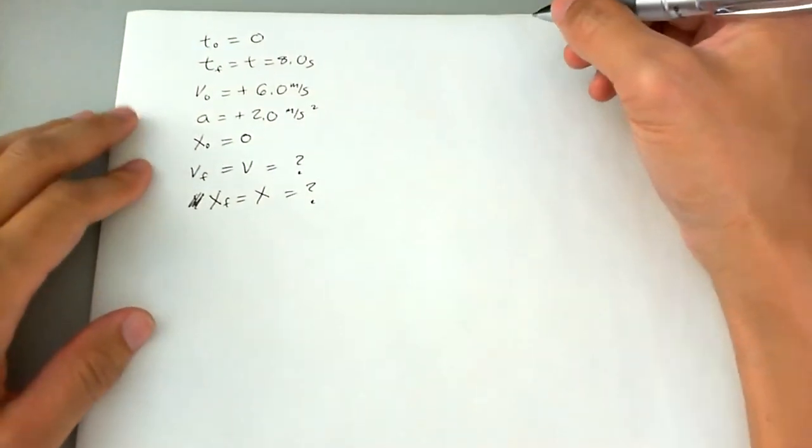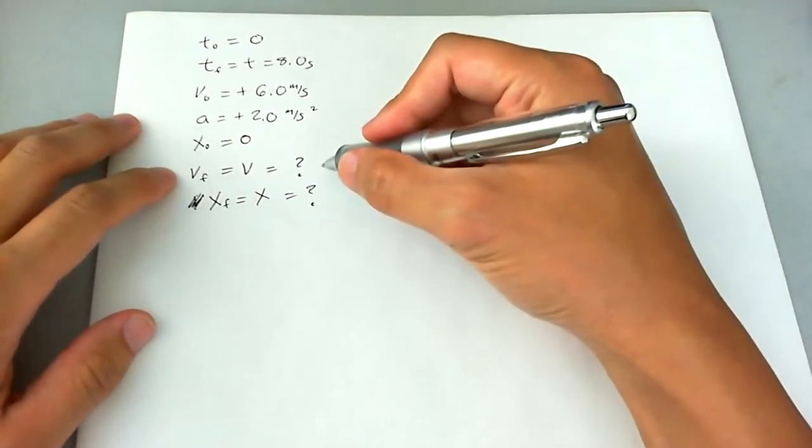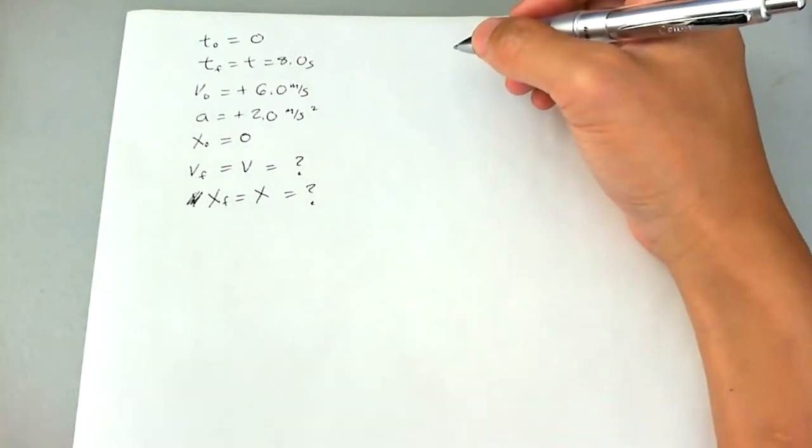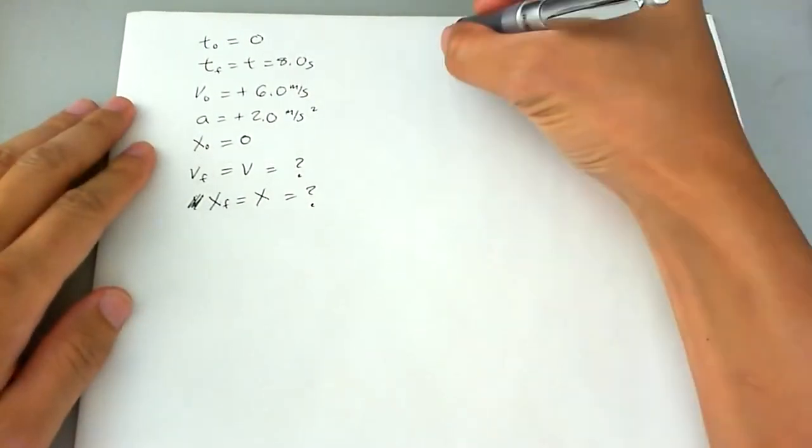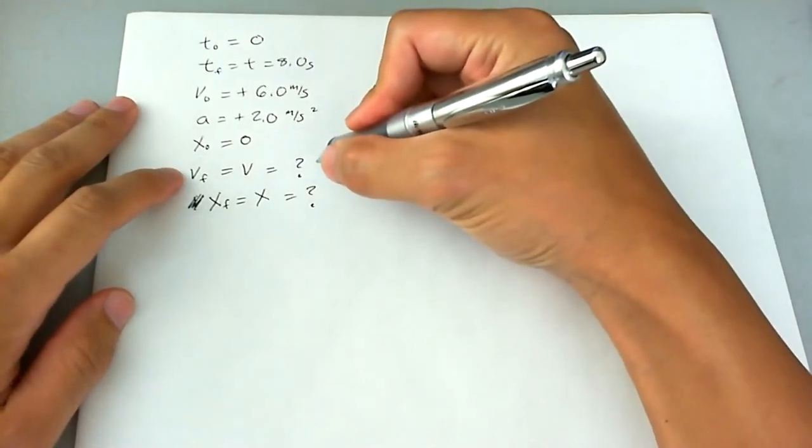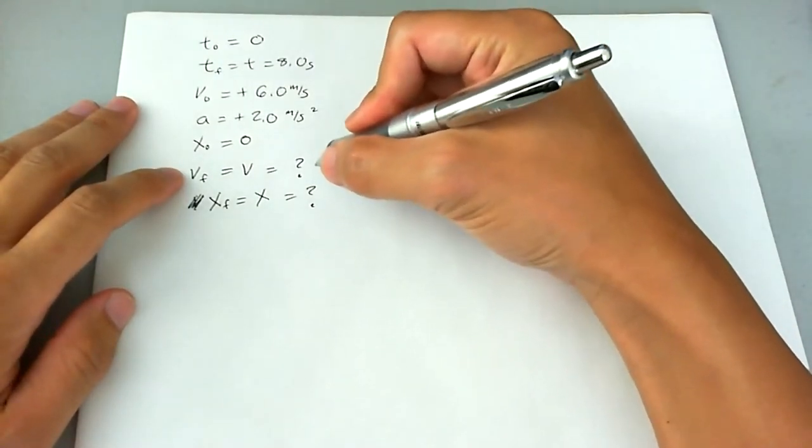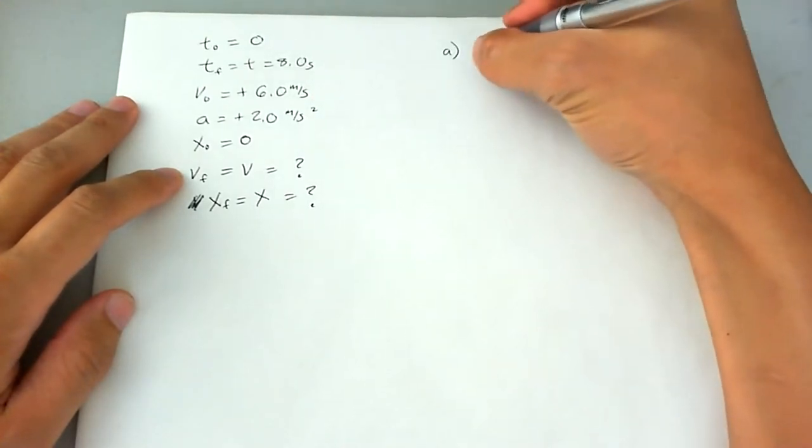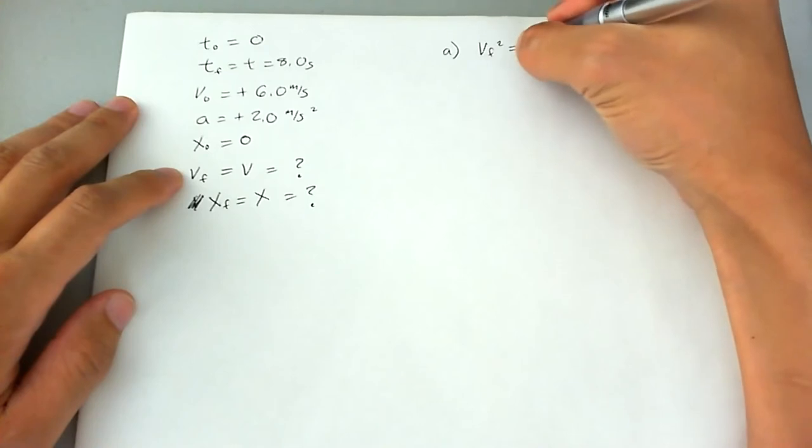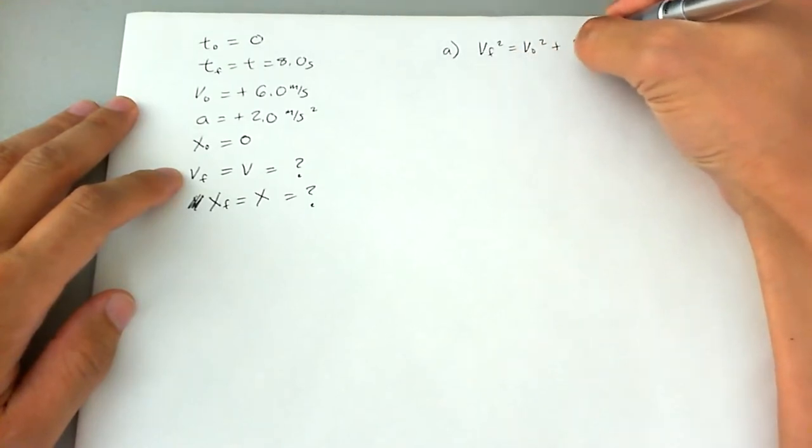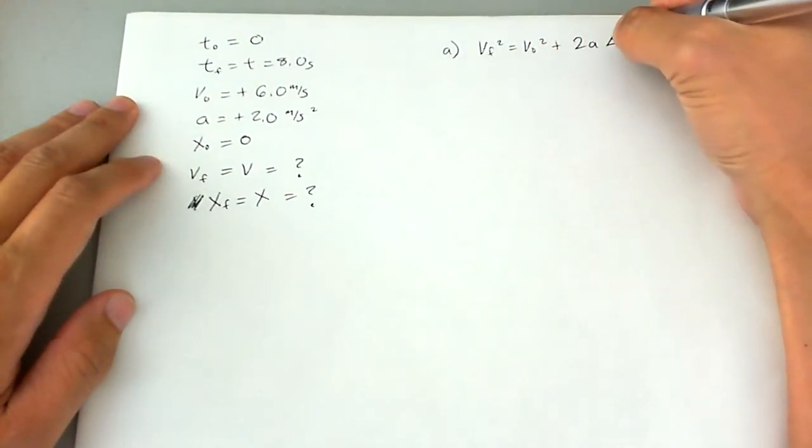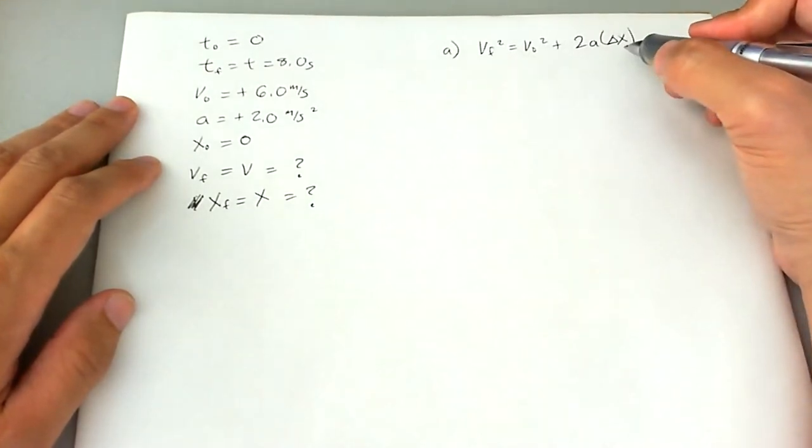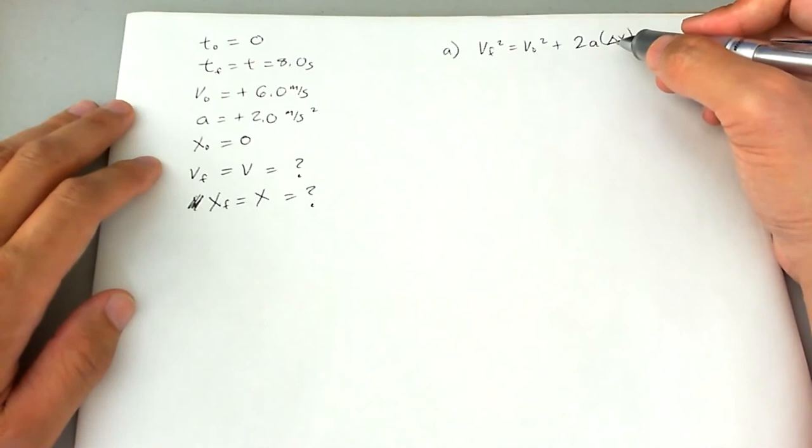Let's go ahead and look at what we need to do to find v final first. One equation comes to mind. We have four kinematic equations, but one comes to mind that both involve the unknown quantity and all the quantities that we do know. And that equation is v final squared is equal to v initial squared plus 2a delta x. Now, most kinematic equations will just have x in it, but delta is the most proper way of saying it.